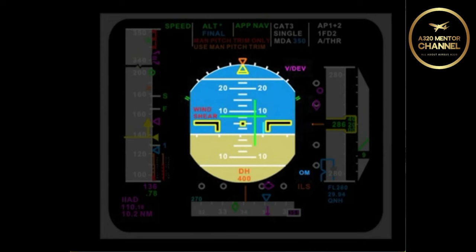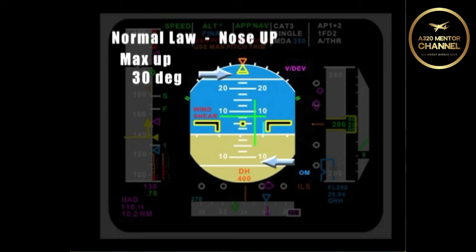In normal law, describe to me the pitch limitations, pitch up and pitch down. With the aircraft in normal law, the maximum pitch up that we can attain is 30 degrees. As we get to 30 degrees, energy will deplete and then it will be limited to 25 degrees. That is true for all flap configurations except for flaps full.